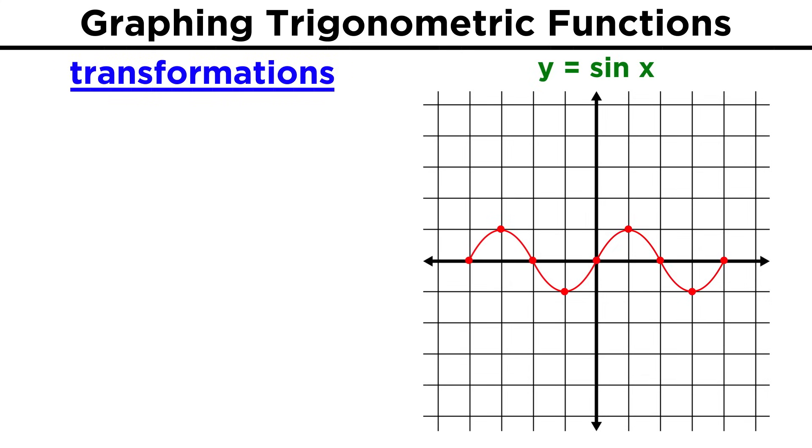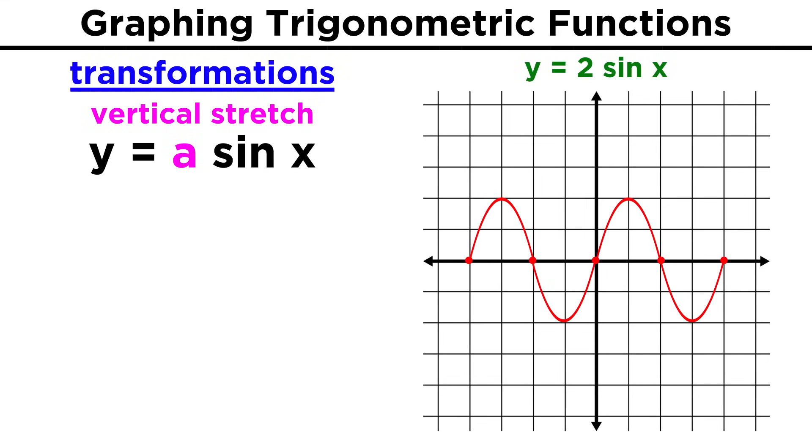How can we manipulate this function? Well, we can apply any of the transformations we learned in algebra. If we put a coefficient here, that will stretch or shrink the function, which will change the amplitude of the function. Y equals two sine x will look the same, except that all the values are doubled, so we are cycling between two and negative two.